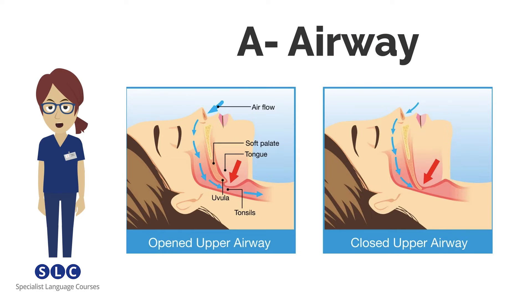Airway obstruction is an emergency situation which leads to hypoxia and death if untreated. A patient whose airway is obstructed finds it hard to breathe and may use accessory muscles of respiration to try to get air into the lungs.